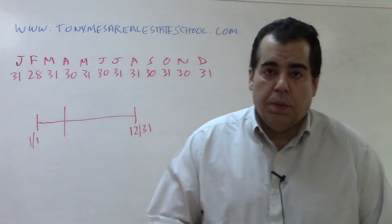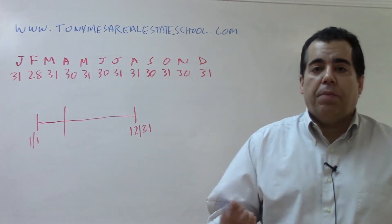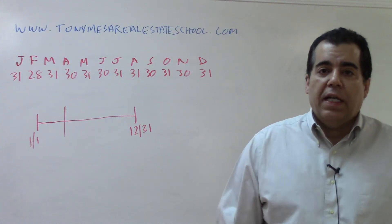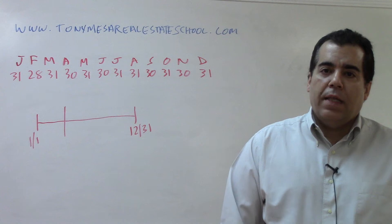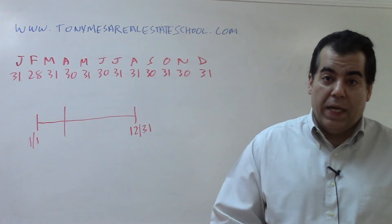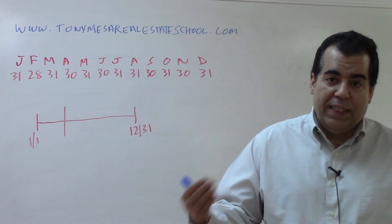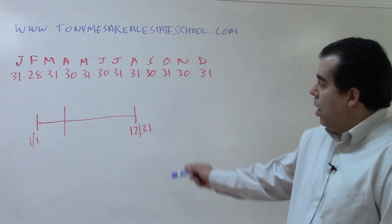Now, what is a proration and when do you do a proration at a closing? Whenever there's an item at the closing that applies to both the buyer and the seller and a calculation needs to be done to make things fair, that's going to be called a proration. And one side will receive a credit, the other side will receive a debit.